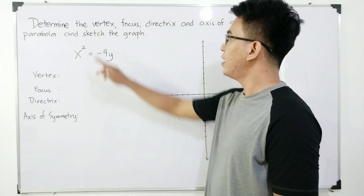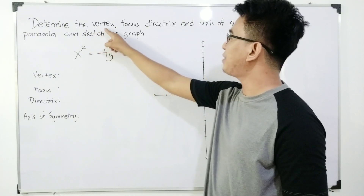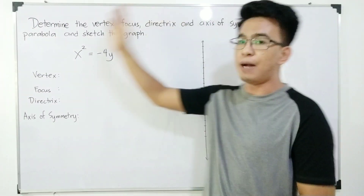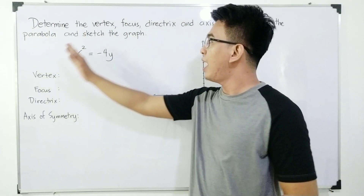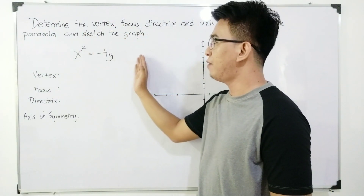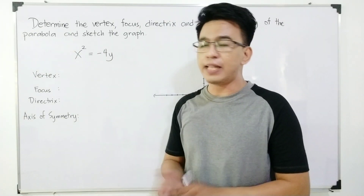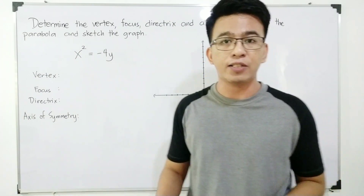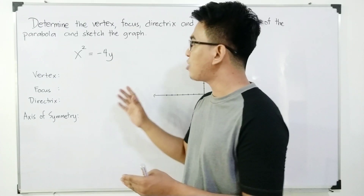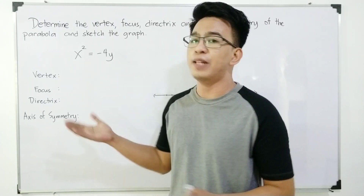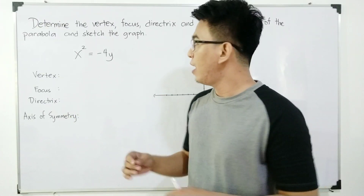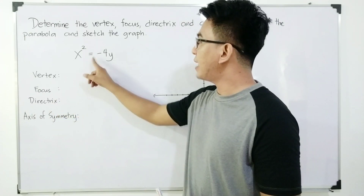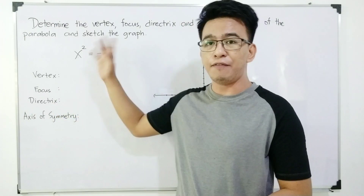So, we are given the direction: determining the vertex, focus, directrix, and axis of symmetry of the parabola and sketch the graph. We need to get the different parts of the parabola so we can sketch its graph. Right now, we are given this equation: x squared is equal to negative 4y.